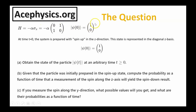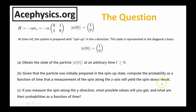Here's the Hamiltonian and here's the state psi at t equals zero. At time t equals zero, the system is prepared with spin-up in the z direction, where the wave function at t equals zero is equal to (1, 0). Part A: obtain the state of the particle psi of t at an arbitrary time t greater than zero. Part B: compute the probability as a function of time that the measurement of the spin along the z-axis will yield the spin-down result. Part C: if you measure the spin along the y direction, what possible values will you get and what are the probabilities as a function of time?